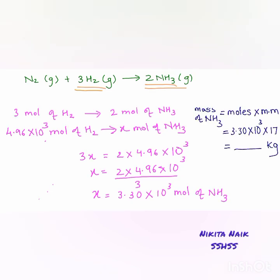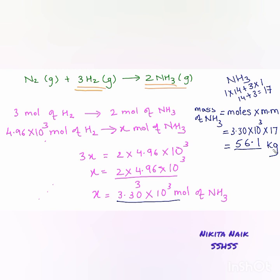The mass of NH₃ is calculated as moles × molar mass. Moles of NH₃ = 3.30 × 10³. The molar mass of NH₃ = 14 + (3 × 1) = 17 g/mol. So mass = 3.30 × 10³ × 17 = 56.1 kg. The mass of NH₃ formed is 56.1 kg. The limiting reagent in this equation is H₂, and N₂ is the excess reagent. Thank you.